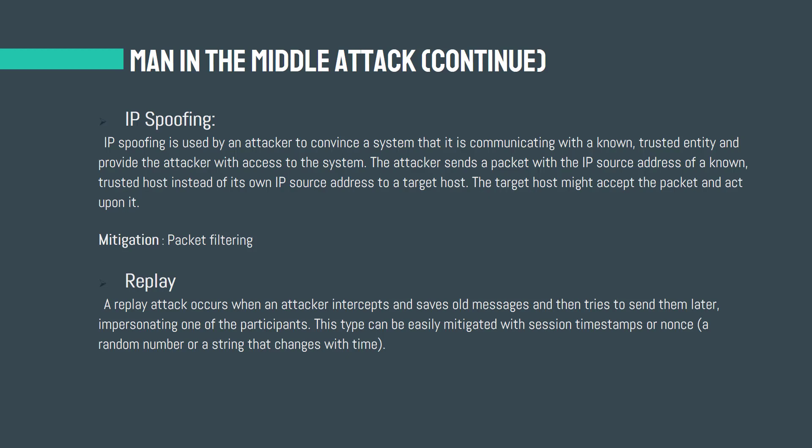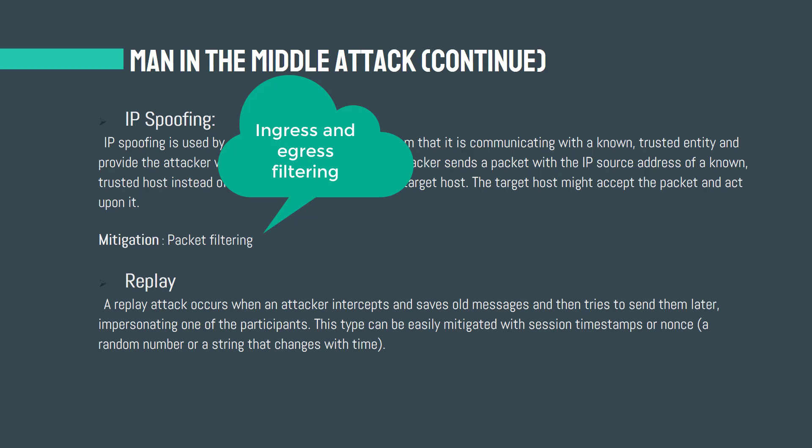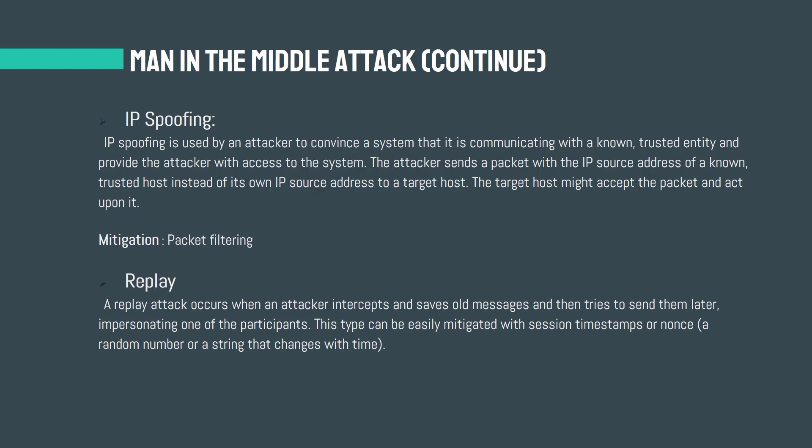The mitigation mechanism for IP spoofing is packet filtering, which is one defense against IP spoofing attacks. The gateway to a network usually performs ingress filtering, which is blocking of packets from outside the network with a source address inside the network. This prevents an outside attacker from spoofing the address of an internal machine. Ideally, the gateway would also perform egress filtering on outgoing packets, which is blocking of packets from inside the network with a source address that is not inside. This prevents an attacker within the network from launching IP spoofing attacks against external machines.